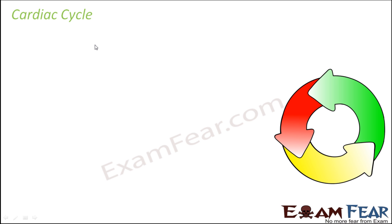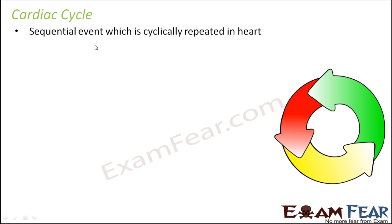Now that we understood the processes of systole and diastole, we will talk about cardiac cycle. We call this a cycle because the processes of contraction and relaxation happen in a cyclic manner. The first step was joint diastole, followed by auricular systole, then ventricular systole, and finally it ended up again in joint diastole. So that is how it is a cyclic process — a sequential event which is cyclically repeated in the heart.